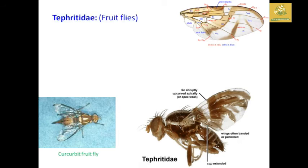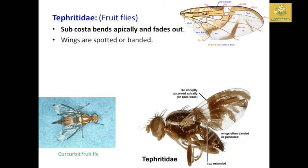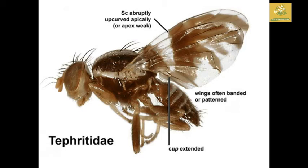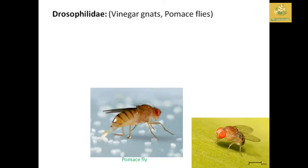Tephritidae are fruit flies. The subcostal vein is apical and fades out in adults. Wings are spotted or banded. Females have a short projecting ovipositor. The maggots can hop and are highly destructive to fruits and vegetables. The cucurbit fruit fly, scientific name Bactrocera cucurbitae, is an example. You can see the wing patterns with a costal extension and an apex break on the wing venation in the picture provided.